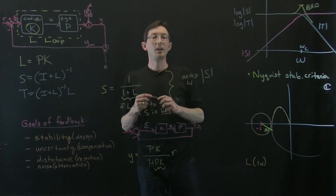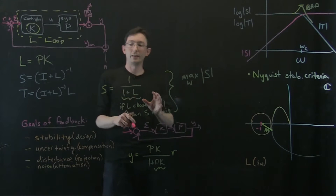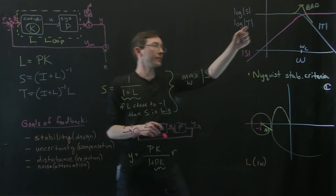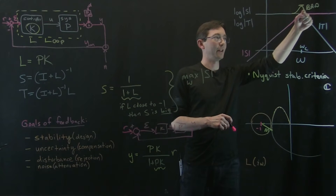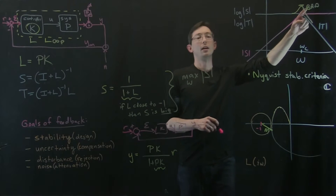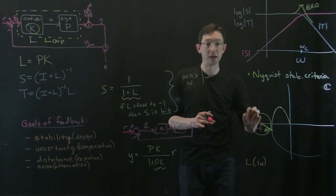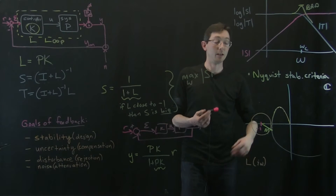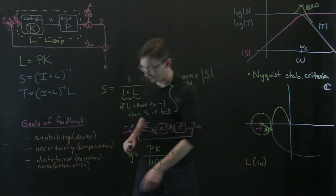Welcome back. Last time we related the peak of the sensitivity function — the maximum value of the sensitivity function — to the robustness in the complex plane of our closed-loop system.